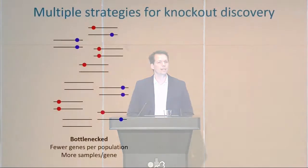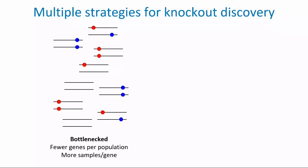Two strategies can be taken. Firstly, to look at bottleneck populations — Mark Daly gave a fantastic example of the Finnish population, which enriches for variants that passed through a population bottleneck and became common. These can include relatively deleterious variants that bump up to higher frequency, meaning a relatively small number of genes have more common loss-of-function variants that can be explored with robust statistical calculations.